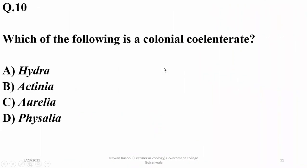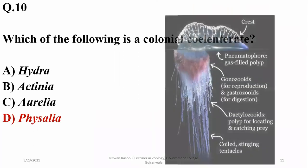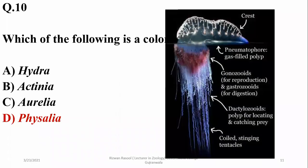Question nine: among the given options, physalia is a colonial coelenterate. The others in the list are solitary organisms.